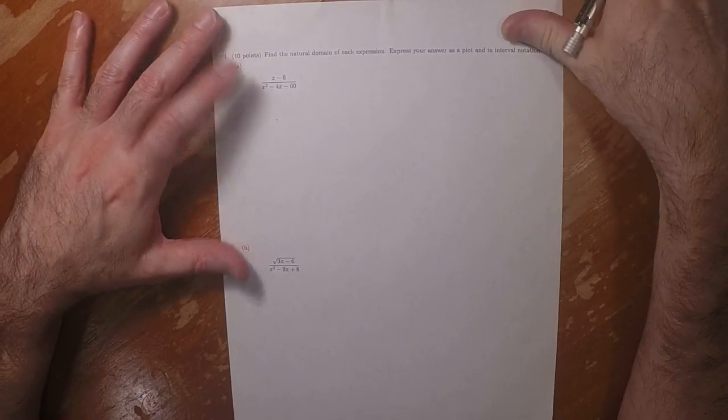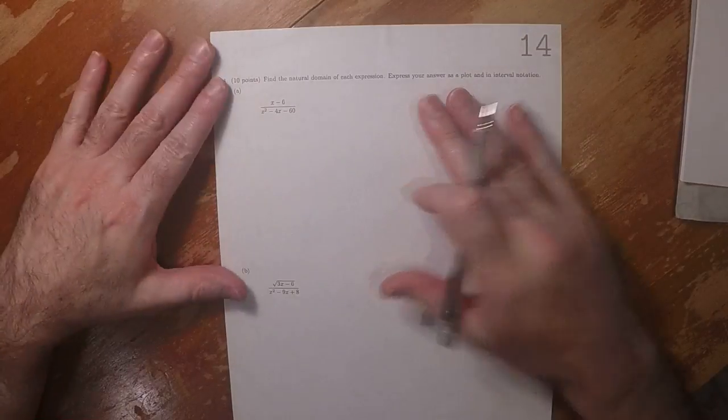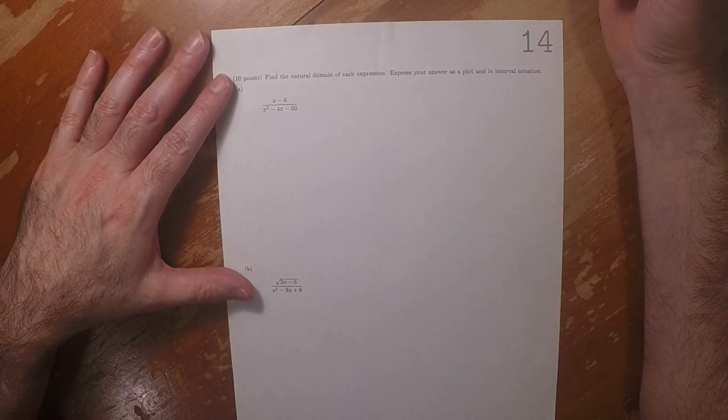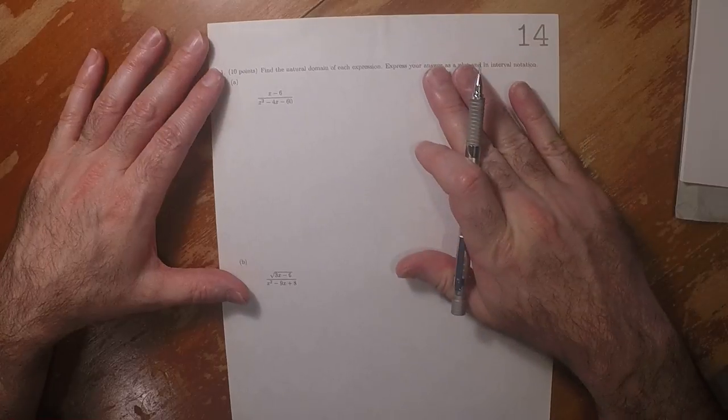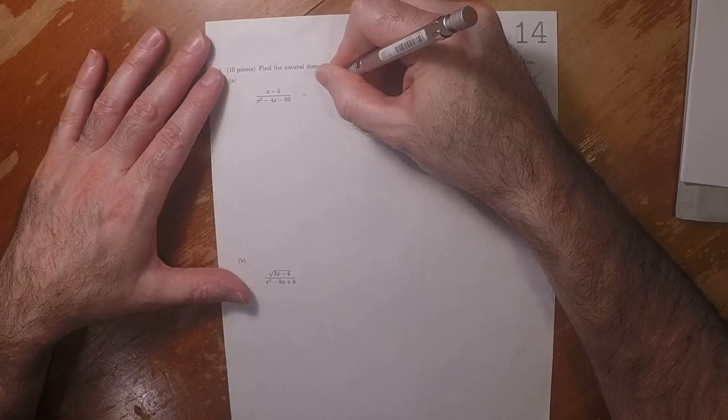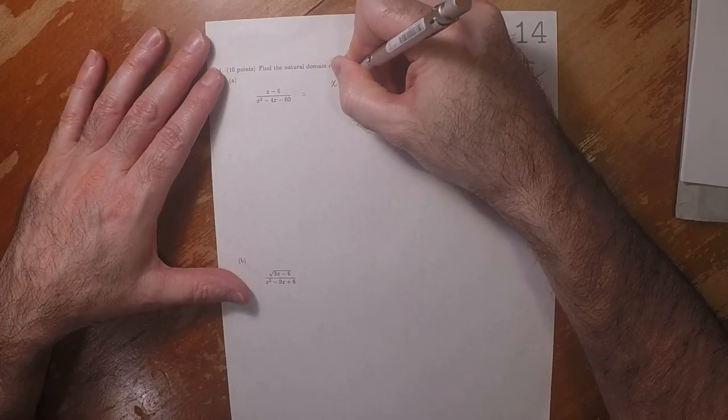This is the solution to written homework 14. It says find the natural domain, so the first thing to do is to factor this expression. So that would be x minus 6 divided by...